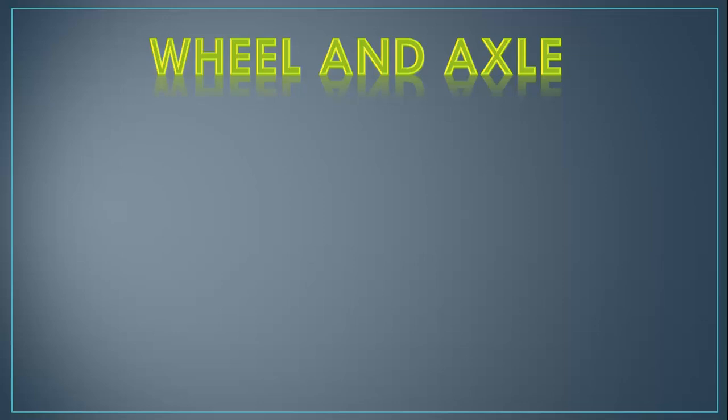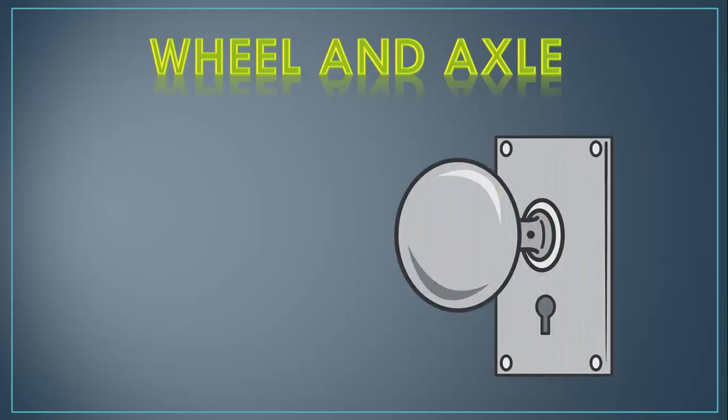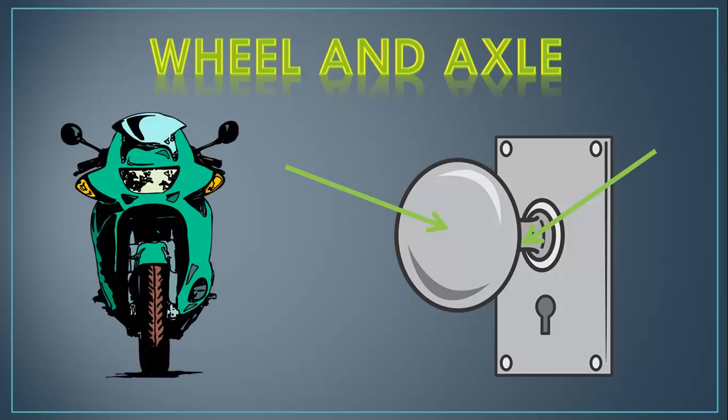Our next example of a simple machine is the wheel and axle. One type of wheel and axle that you come into contact with probably on a daily basis is a doorknob. The wheel is the handle of the doorknob, and the axle is the point that the wheel spins on. You can also think of a wheel and axle on something like a motorcycle. We, of course, know that the wheel is the part that the motorcycle sits upon, and the axle is the point that goes through the wheel and allows the wheel to spin. Again, we're decreasing the amount of force required and making work easier.